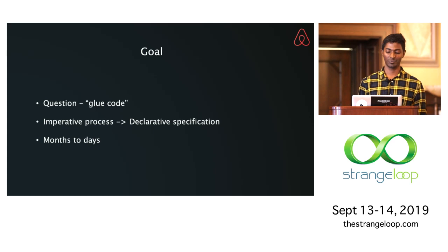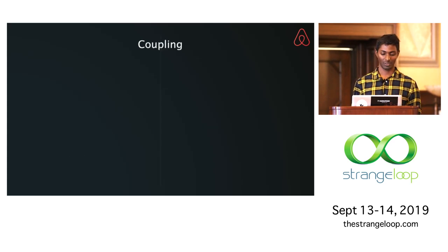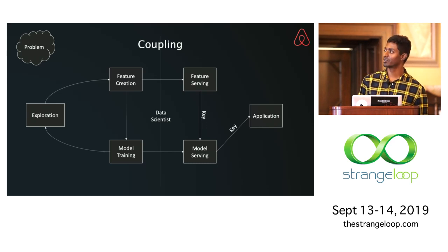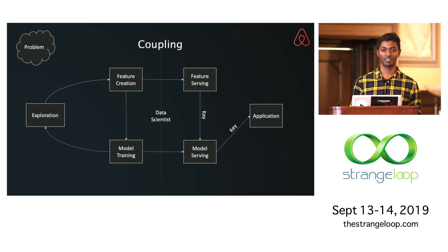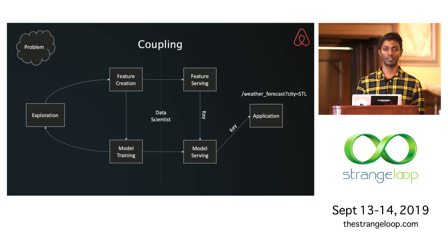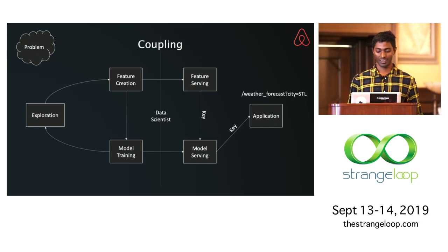There is another problem here, which is the coupling with the application servers. There is a subtle difference in the architecture: there is a new thing called a key flowing between feature serving and application serving. If you're trying to predict weather in St. Louis, the question doesn't really care about all the signals that go into the prediction — the key is simply the city, St. Louis itself. The idea is to minimize the surface of contracts between applications and the machine learning system.